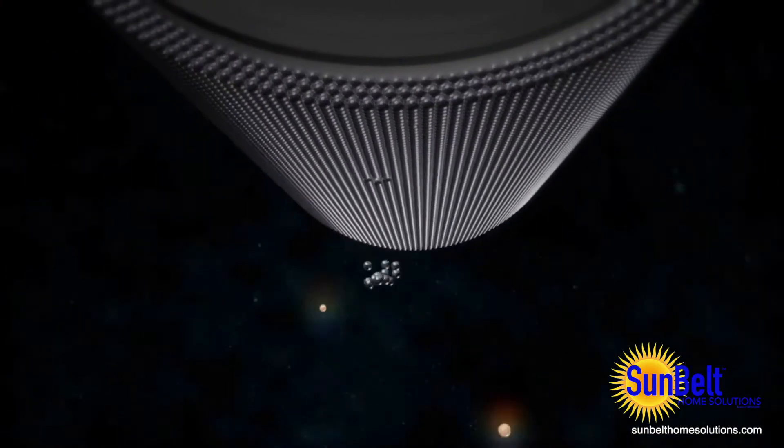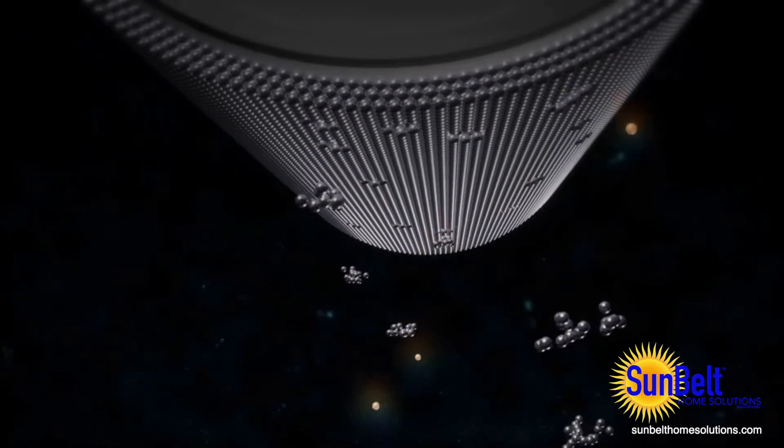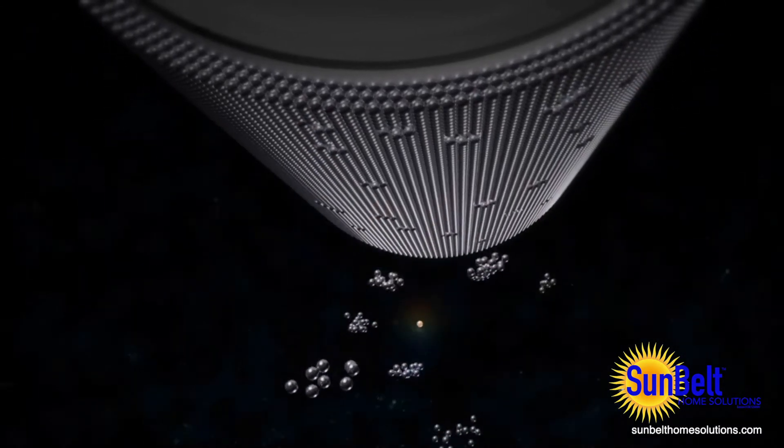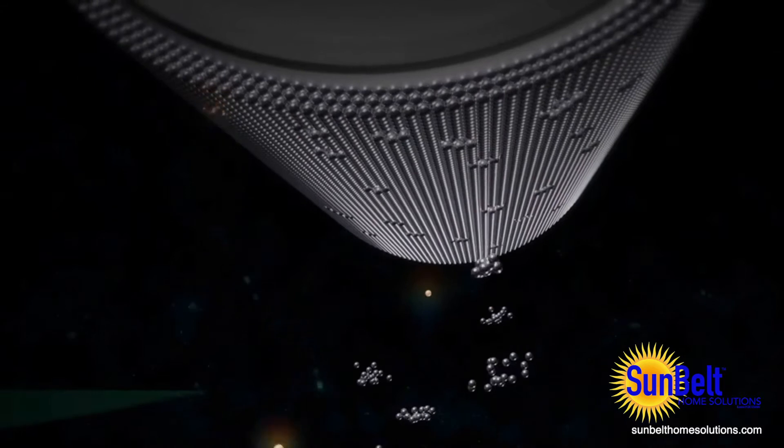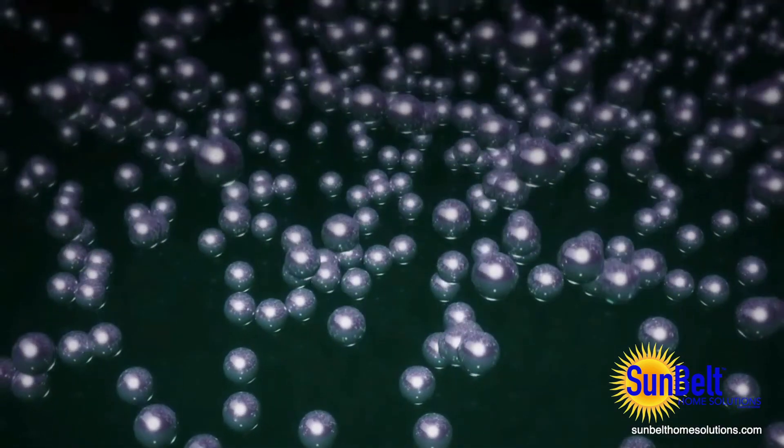The positively charged ions from the plasma are attracted to the coating material, bombarding it and dislodging individual atoms. These atoms are applied evenly to the glass surface, producing a thin film.